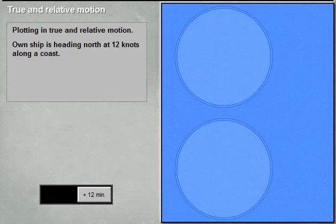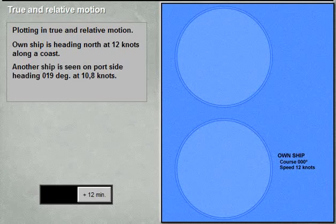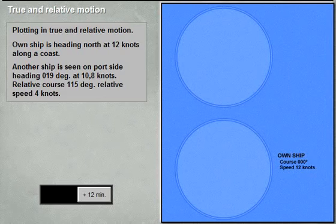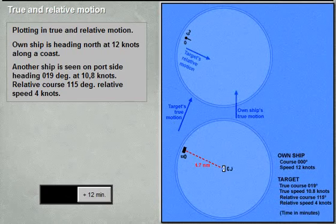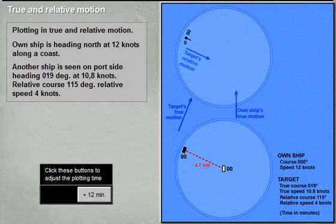One ship is heading north along a coast. Another ship is seen on heading 019 at 10.8 knots. Relative bearing 115 degrees, relative speed 4 knots.